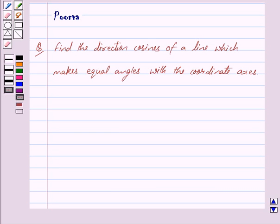Good morning friends, I am Poorva and today we will work out the following question. Find the direction cosines of a line which makes equal angles with the coordinate axes.